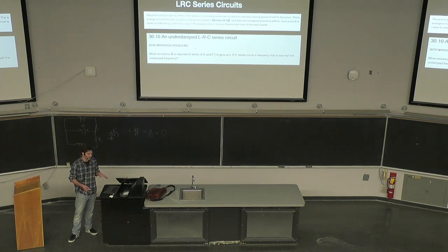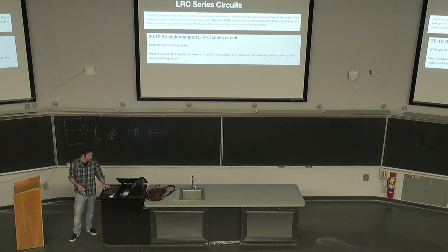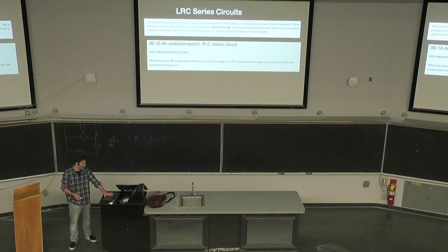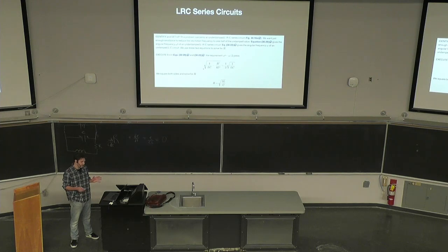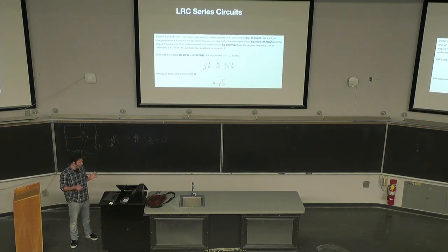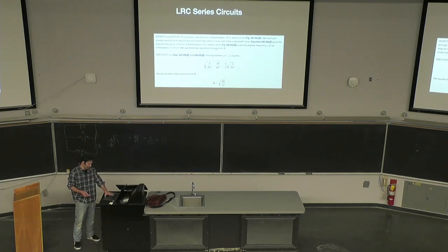The behavior of the RLC circuit is completely analogous to the damped oscillator. That's how these equations were solved — they were first solved for oscillators and then it was realized you could use the same methods here. When we have a sinusoidally varying source of EMF in the circuit, that's when we get the practical applications of an LRC series circuit, analogous to forced oscillations. Such a circuit is called an alternating current circuit.